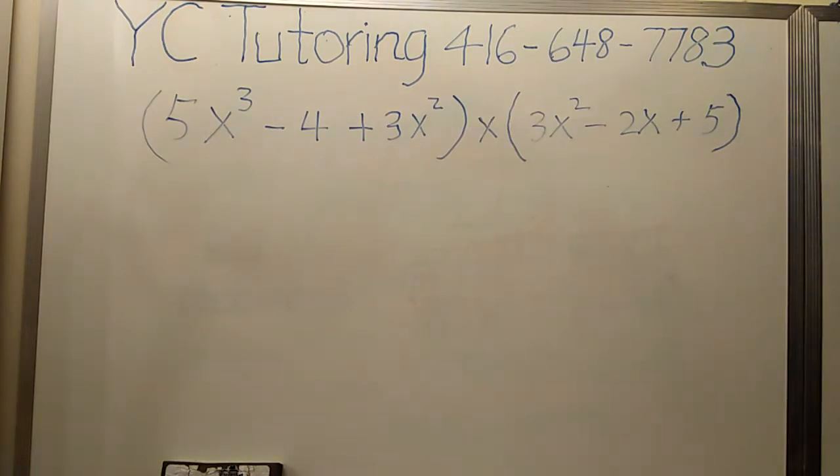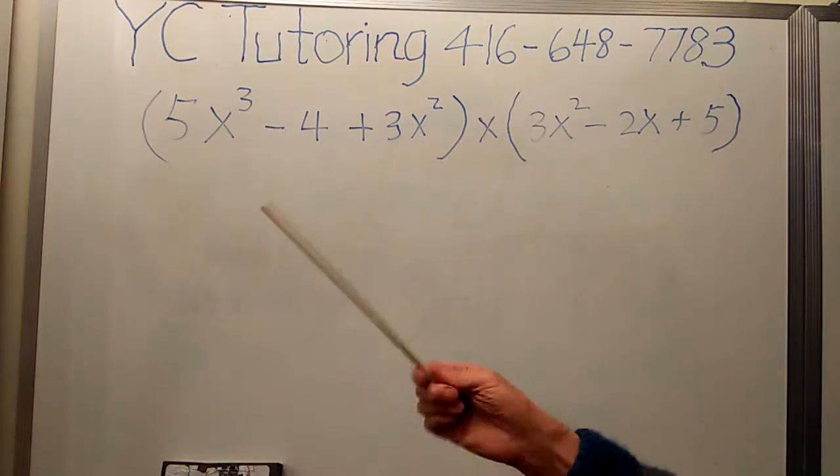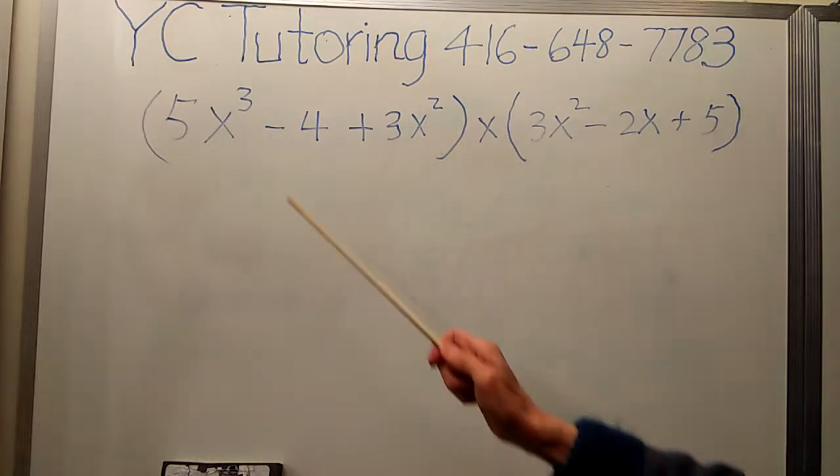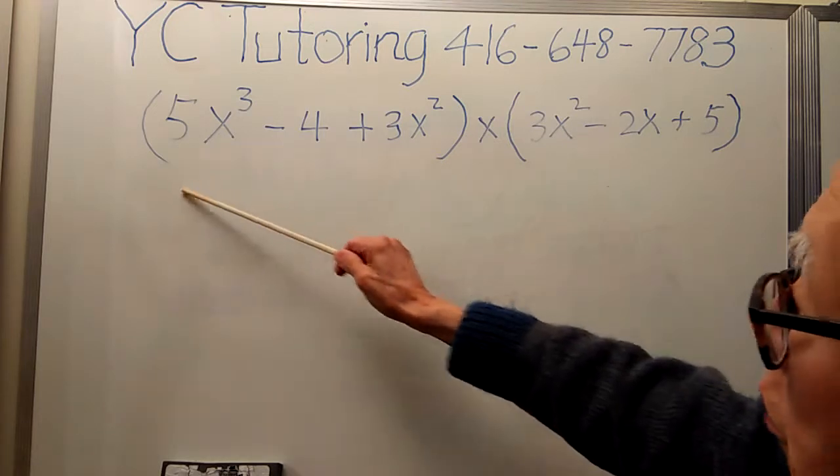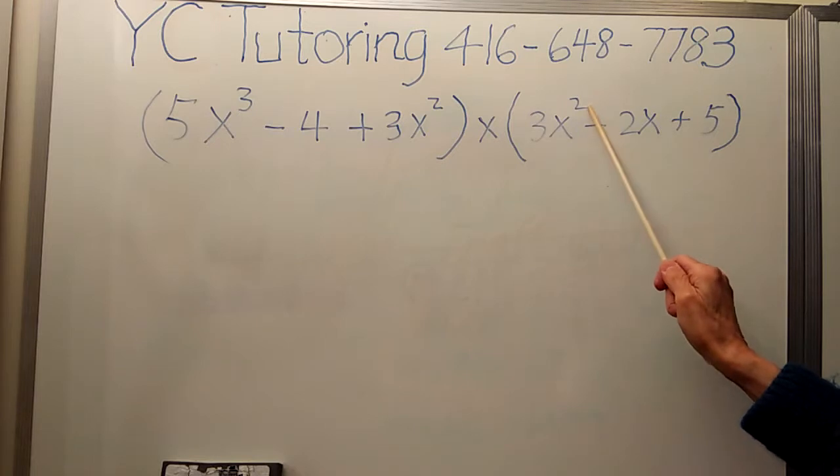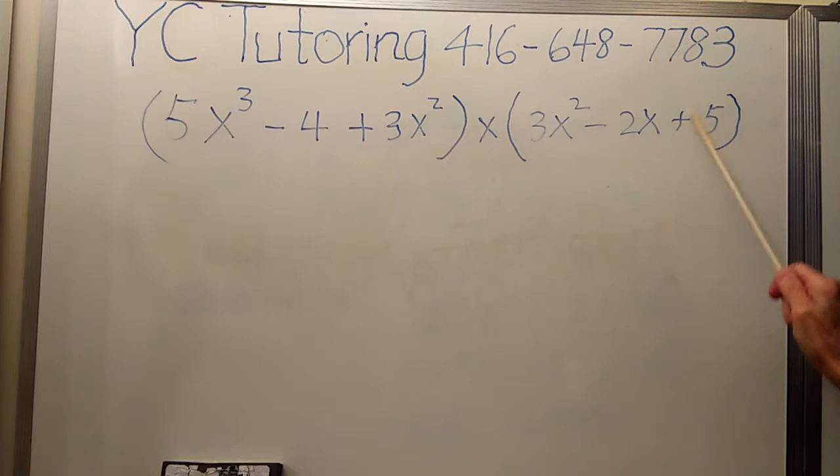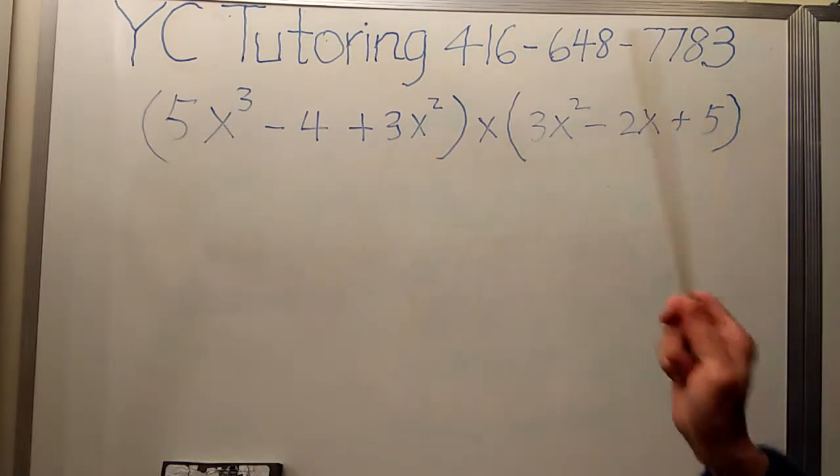First of all, we notice that this is not in the right order. You see cube here and square here, we should put this in the middle. Cube, square, and so on. So let's rewrite this. This is okay because you see square, and this is exponent 1, and this is a constant. So I need to rewrite this and then multiply.